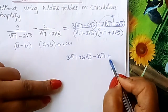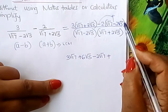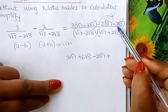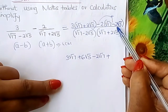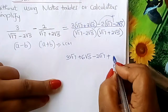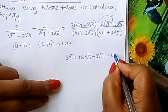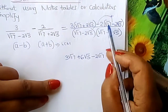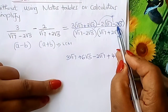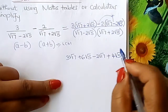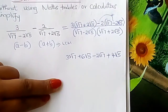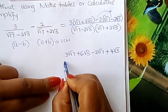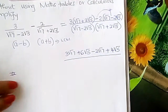Continuing with the numerator: 2 times 2 is 4, so you get 4 root 5. Then you put your denominator below.